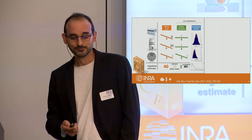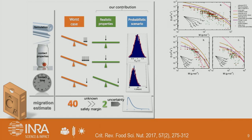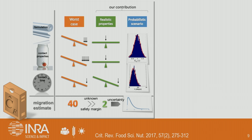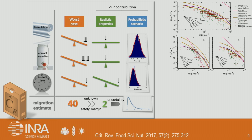What you can do is use conservative models in worst-case scenarios. When diffusion coefficients versus molecular mass are spread broadly, you can overestimate everything in a conservative manner. There are different models published in the literature and you can use any of them. But if you want to do something more sophisticated, you have to do more sophisticated modeling based on realistic properties or even probabilistic scenarios.